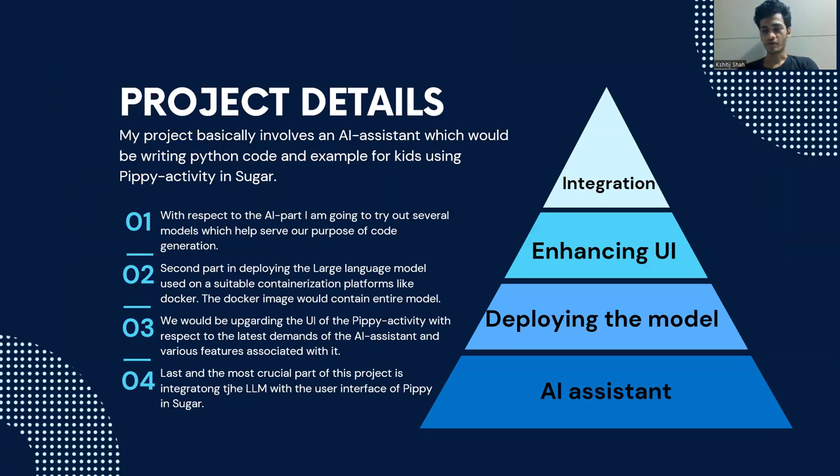Now talking about the project, that is adding an AI assistant to the Pippy activity. It mainly works in four stages. The first stage includes building an AI assistant. The AI assistant would be generating code for kids and open source developers. These AI models are large language models.